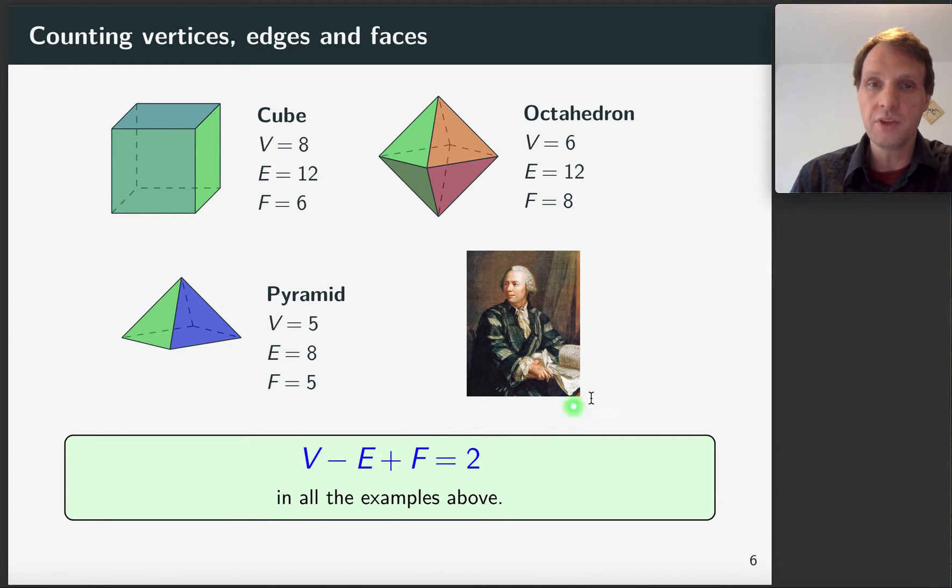And the Swiss mathematician Leonard Euler, who lived in the 1700s, made a curious observation about these numbers, namely that if you take the number of vertices, subtract the number of edges and add the number of faces, then in all of these examples you get the number two. And you can pause the video here and check that my computations are correct and that you indeed always get the same number.